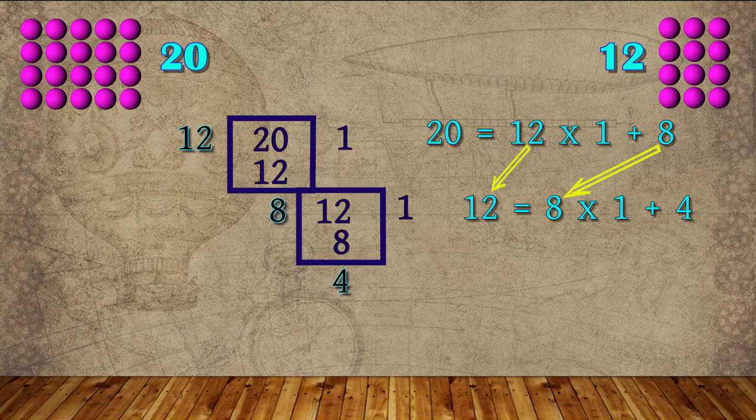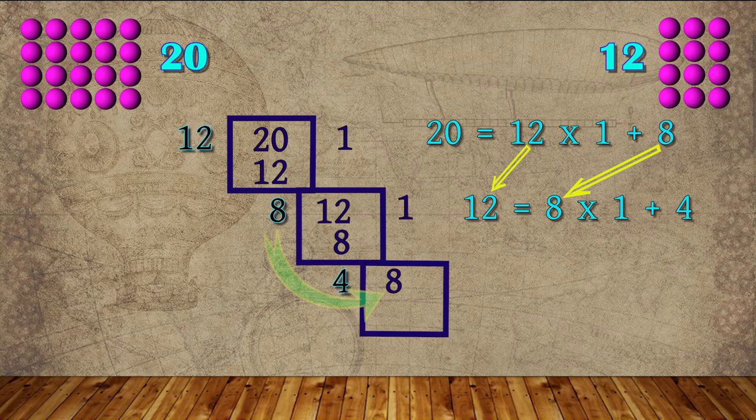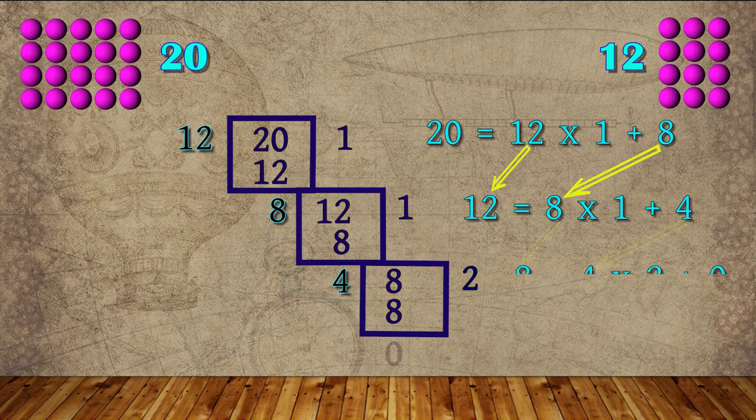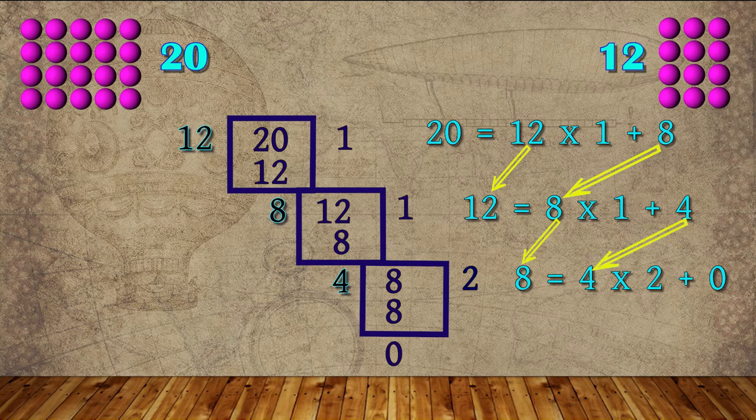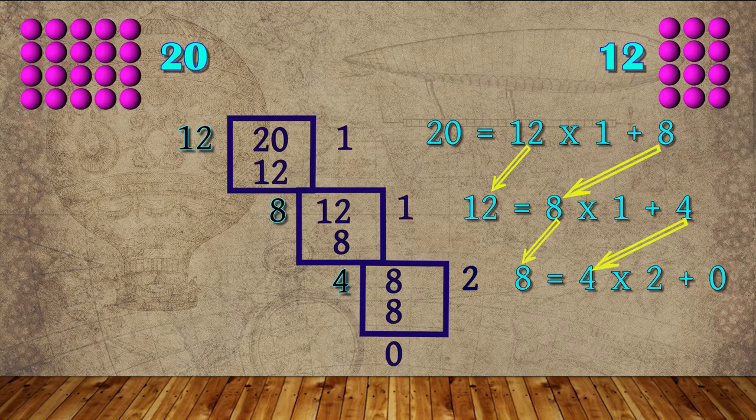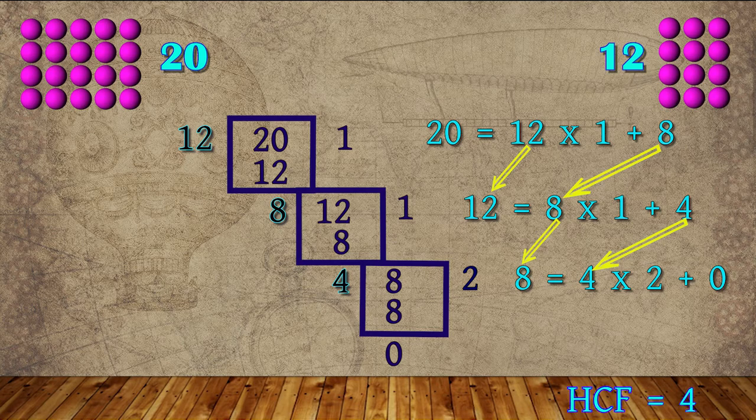we get 4 as remainder. Again taking 4 as divisor and 8 as dividend, continue the division process and finally we get remainder 0. Since remainder is 0, the condition is satisfied. The last divisor 4 will be the HCF of 12 and 20.